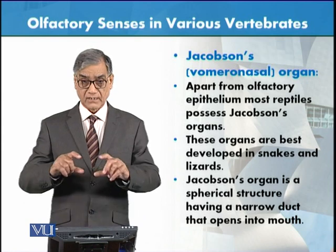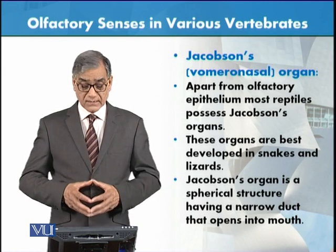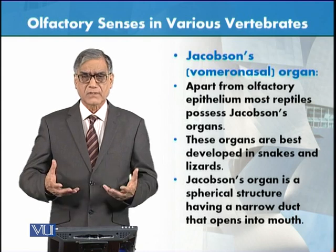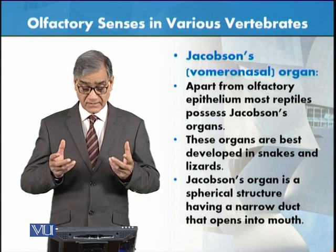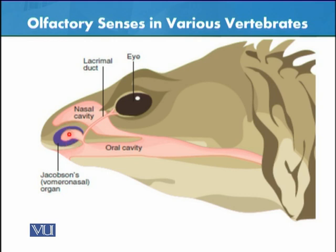Jacobson's organ is best developed in snakes and lizards. It is a spherical structure having a narrow duct that opens into the mouth. Looking at the head of a lizard, Jacobson's organ is located with a small duct — the lacrimal duct — connected from the eyes to the oral cavity. This organ is very sensitive to smell.